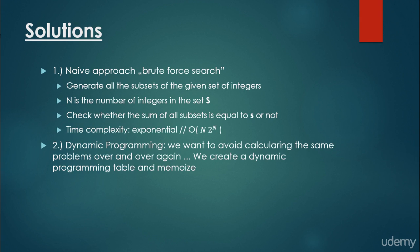Now, the solutions. First of all, the naive approach is the brute force search: generate all the subsets of the given set of integers. If the number of integers in the set S is equal to N, there are 2 to the power of N possible subsets. We have to check whether the sum of all subsets equals the target S. We can do each check in linear time, so the overall time complexity is N times 2 to the power of N — a typical exponential time complexity, which is not so good.